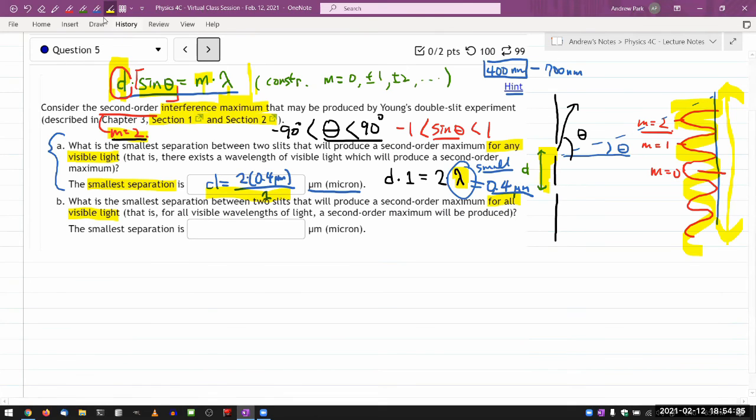With this condition, in this expression d times one - the maximum value sine theta can be - equals two (the order) times the wavelength. This time I want the wavelength to be large so that it captures the most vulnerable of the wavelength that will start to have disappearing second order maximum. So here I take the longest end of the visible range, 700 nanometers, that would be the deep red, just below the infrared, and here the answer should be basically the same thing.